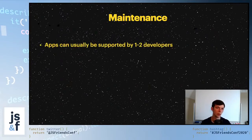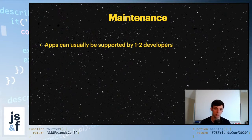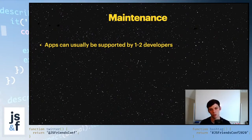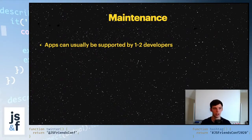Maintenance: apps can usually be supported by one to two developers. As a mobile developer, I can manage both the iOS and Android builds of the same app by myself. Most of the time, if you find a bug, unless it's a weird outlying bug affecting a certain user on a certain platform, your fixes are going to be logic-based. When you fix those in iOS, you'll also be fixing them in Android.